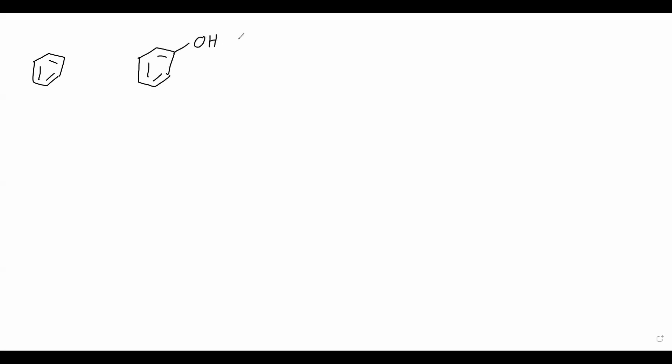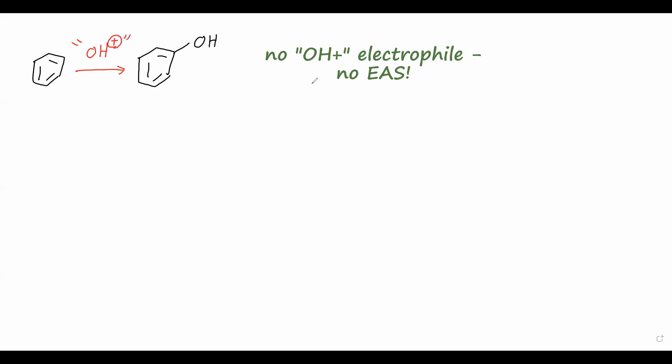Let's start with how to synthesize phenols. If we start with benzene, our model six-membered aromatic ring, and we want to synthesize phenol — just benzene with a hydroxyl group on one of these carbons — thinking within the realm of electrophilic aromatic substitution, we might need to generate an electrophile like OH+. However, we don't know of any reagent that can give us the equivalent of an OH+ electrophile, so we actually aren't going to be able to perform an electrophilic aromatic substitution to form the phenol product. We need to find a different way to accomplish this.